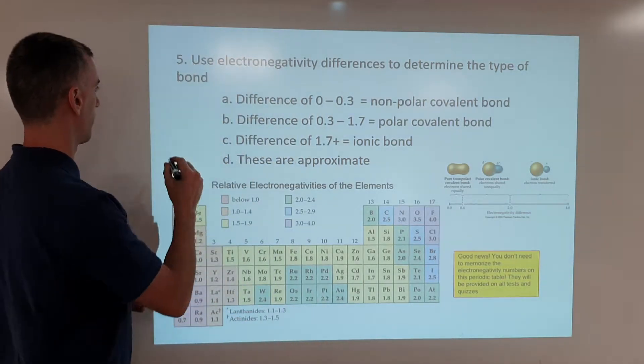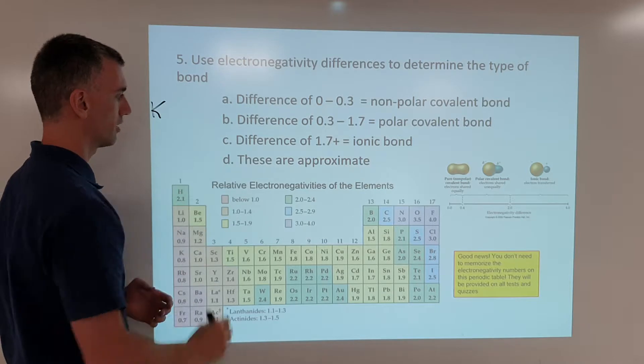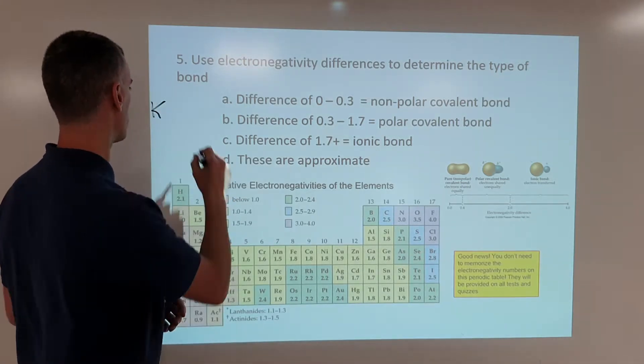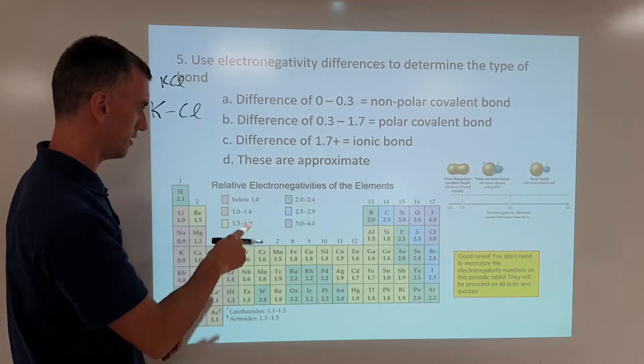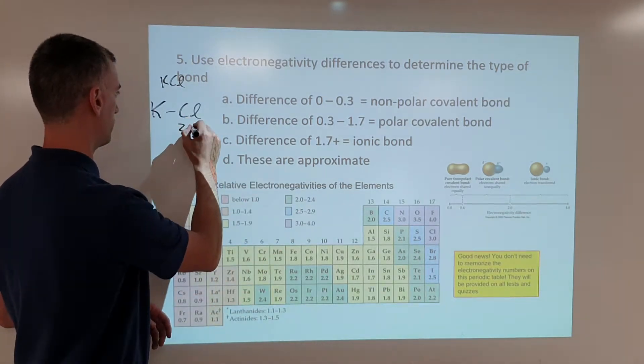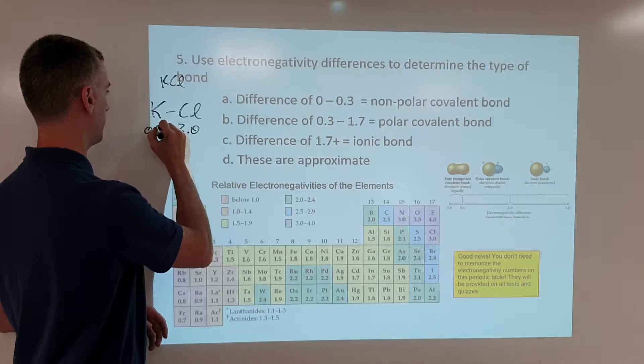and a nonmetal, say chlorine, formula KCl, and we take 3.0, 0.8.